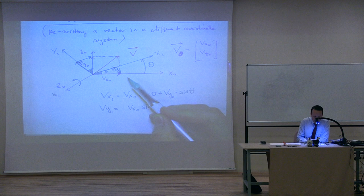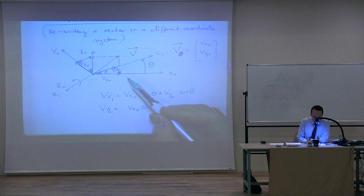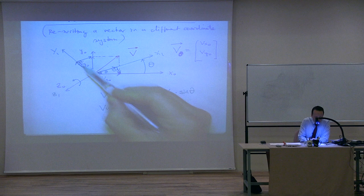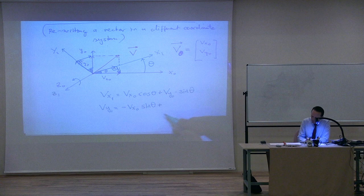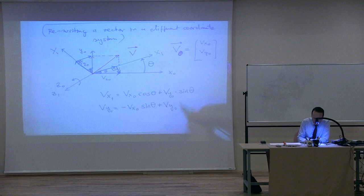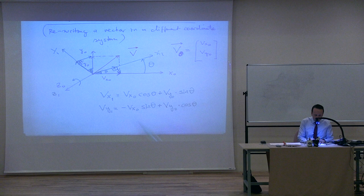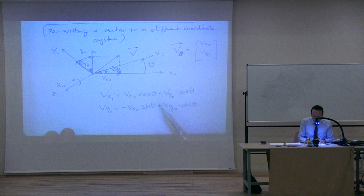Now assume this is three-dimensional. In 2D we had that rotation around z. In 3D, if the vector had a component in the z-direction, it would remain the same because we rotated around z — so there is no change in z. Therefore vz₁ = vz₀ at all times. The 3D transformation matrix for a rotation around the z-axis by angle θ is: [vx₁, vy₁, vz₁] = [[cos θ, sin θ, 0], [−sin θ, cos θ, 0], [0, 0, 1]] · [vx₀, vy₀, vz₀].